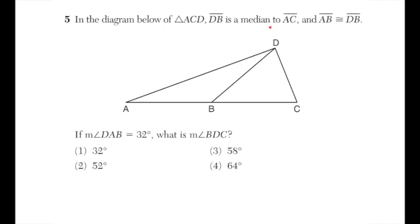Question number five: in triangle ACD, DB is a median to segment AC, so AB is congruent to BC. Also, segment AB is congruent to DB. Since AB ≅ BC and AB ≅ DB, triangle ABD is isosceles with congruent base angles, and triangle CBD is also isosceles with its two base angles congruent. Angle DAB is 32 degrees.